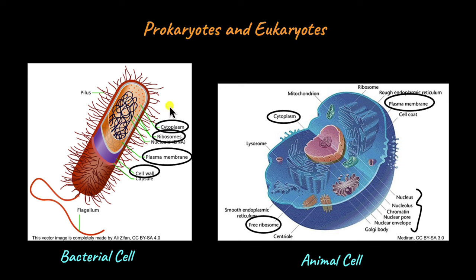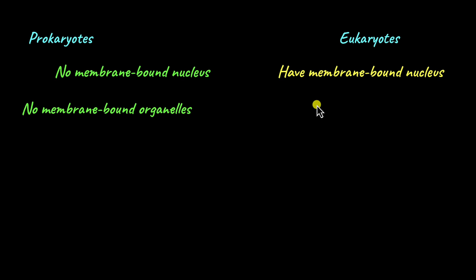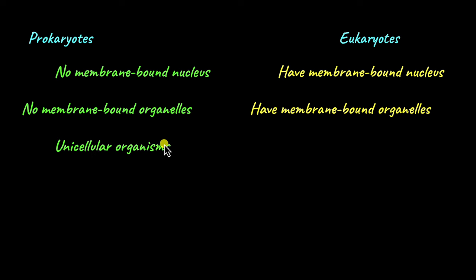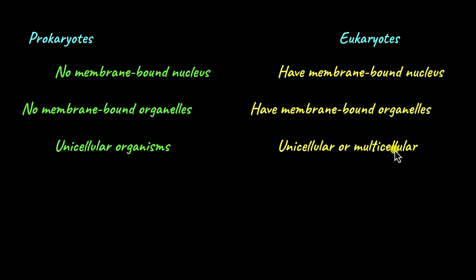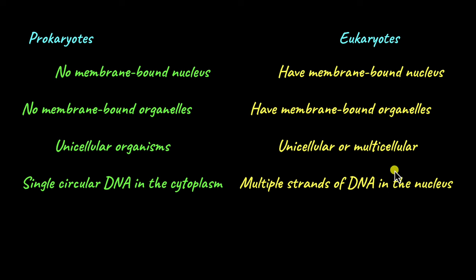Let's quickly summarize the differences between prokaryotes and eukaryotes. Prokaryotes do not have a membrane-bound nucleus, which is present in eukaryotes. Prokaryotes lack membrane-bound organelles, but eukaryotes have several. Prokaryotes are mostly unicellular organisms — bacteria and archaea are majorly unicellular. Eukaryotes can be unicellular or multicellular: protists are unicellular eukaryotes, some fungi are also unicellular, while several fungi, plants, and animals are multicellular. Prokaryotes have a single circular DNA that floats in the cytoplasm, whereas in eukaryotes there are multiple strands of linear DNA arranged within the nucleus.